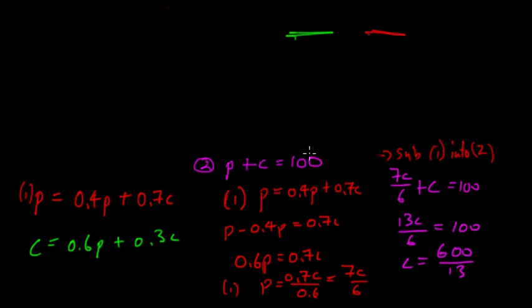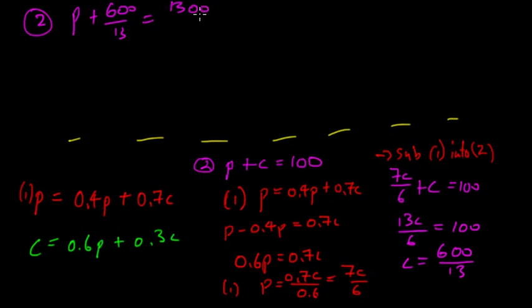So we're going back to 2, we sub c in. We get p plus 600 over 13 equals 1300 over 13, that's just 100. So p is equal to 700 over 13.